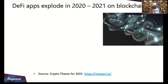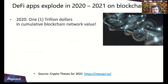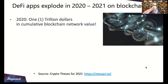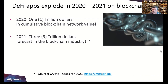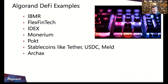DeFi is by far and away the largest solution on blockchain — it exploded last year, primarily in the second half. That explosion is going to continue through end of this year. One trillion dollars in cumulative blockchain network value in 2020 — documented in the Messari report — and three trillion dollars forecast in 2021. That's mind-boggling.